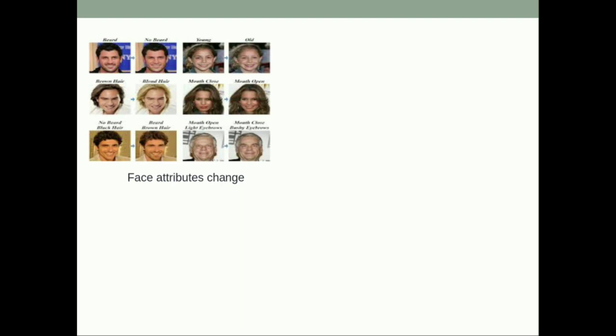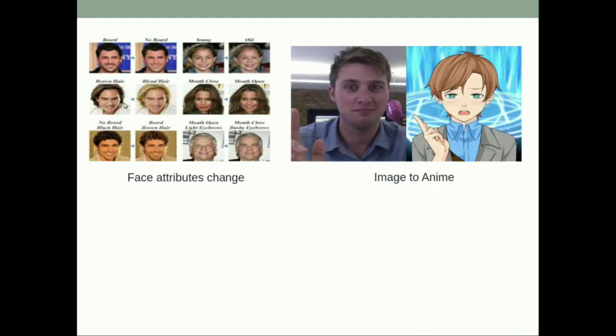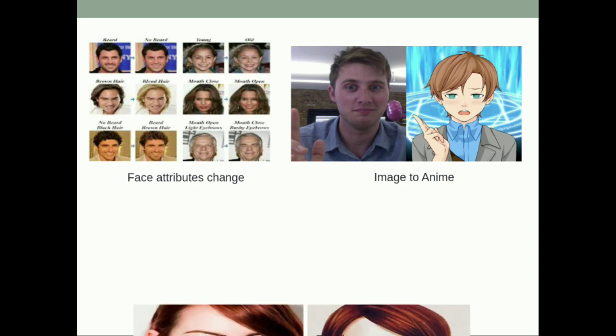Here's another example using human faces. There are two different kinds of changes. One is local level changes — for example, taking one face and transforming it by changing local attributes like beard vs. no beard, young vs. old, or blonde vs. brown hair. The other is global level changes, where we have to take every pixel into consideration and change every pixel.